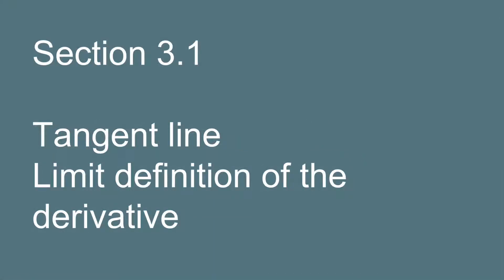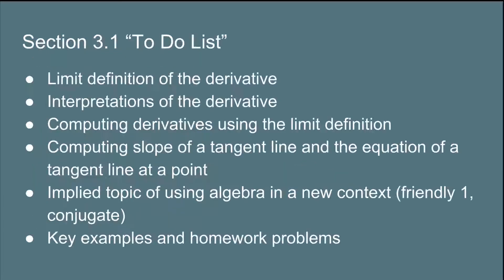Now that the context is set, let's take a look at a specific example. We're in Calculus 1 and we're looking at the tangent line and limit definition of the derivative. We're in section 3.1 of the textbook that we're using at Cal Poly, and so I put together a little to-do list for this section. There's the limit definition of the derivative, interpretations of the derivative, computing derivatives using the limit definition, computing slope of a tangent line and the equation of a tangent line at a point.